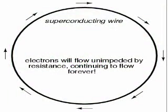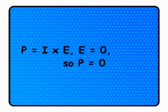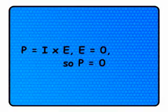Likewise, if we were to have a short circuit constructed of a loop of superconducting wire — absolutely zero resistance — we could have a condition of current in the loop with zero voltage, and likewise no power would be dissipated. Since power equals I times E, and E equals zero, and anything multiplied by zero is zero, the power dissipated in a superconducting loop must be zero. We'll be exploring the topic of superconductivity in a later chapter.